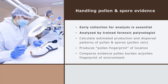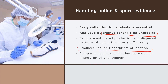When handling pollen and spore evidence, early collection is essential because pollen and spores blow around, desiccate, and rub off very easily. If you think you'll need to collect this evidence, you need to do it right away — it will be one of the first things you do. Analysis requires a specifically trained forensic palynologist. They'll calculate the estimated production and dispersal patterns — also known as pollen rain — produce a pollen fingerprint of the location at that point in time, and then compare the pollen burden on the evidential item with what the atmospheric pollen would have looked like. A match can link that evidence to that location; a mismatch can indicate the evidence was somewhere else at the time of the crime.